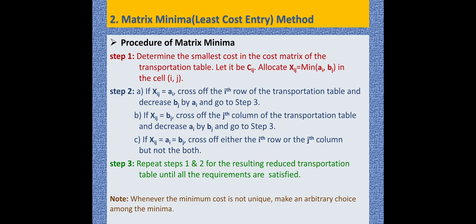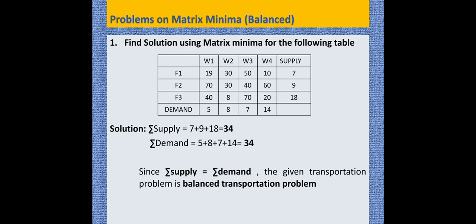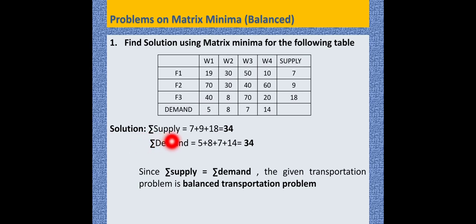Note: whenever the minimum cost is not unique, make an arbitrary choice among the minima. Now let us solve the problem. The source and destination are given — we can call them factories and warehouses. Supply equals 34 and demand equals 34, so it is a balanced transportation problem.